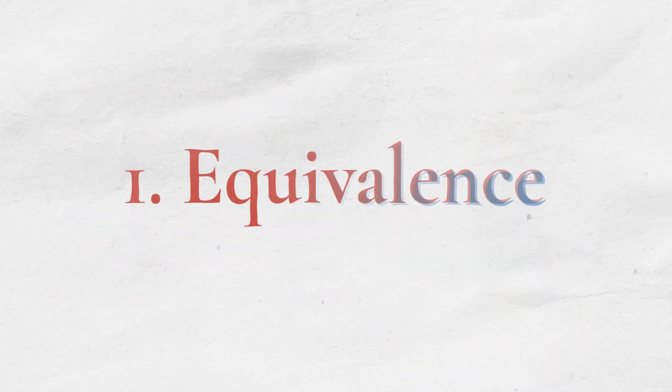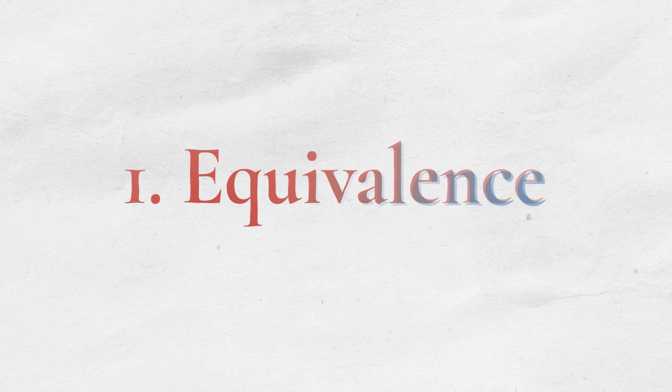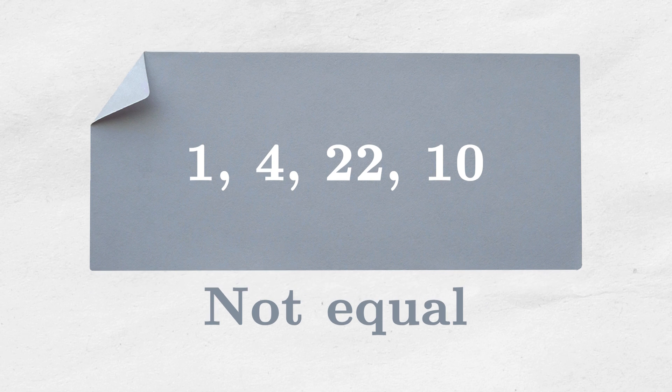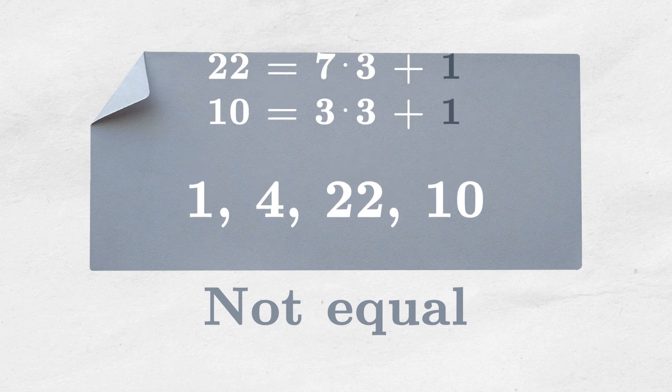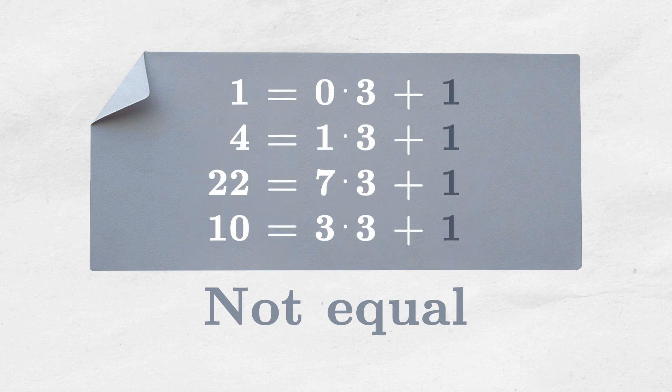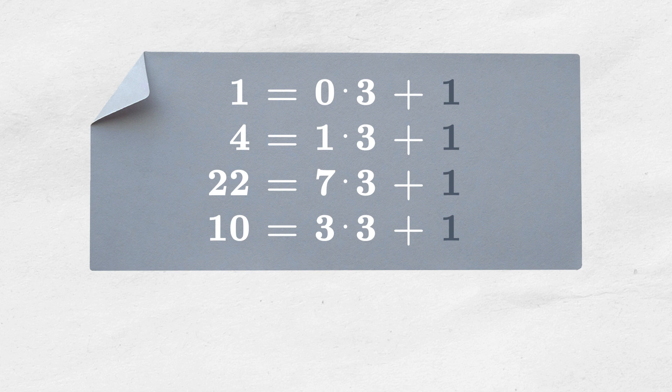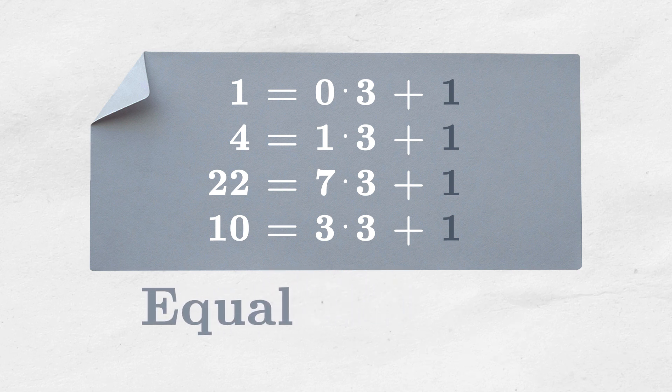In mathematics the notion of equality extends beyond its usual understanding. For example, take a look at the following numbers. Would you say that these numbers are equal to each other? Of course not, they all have different values, so they cannot be possibly equal. But when we change the context, the definition of equality, they suddenly become all equal to each other, but in a different sense.